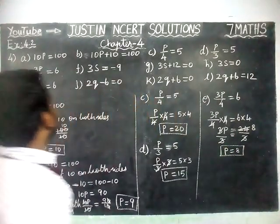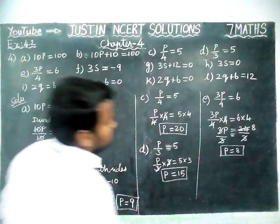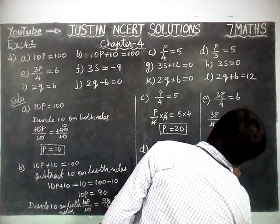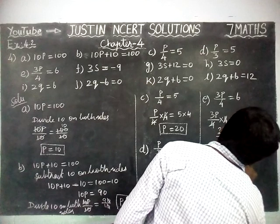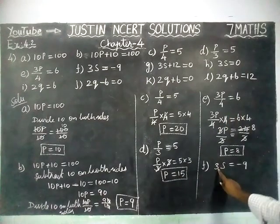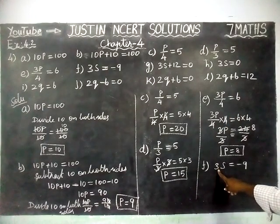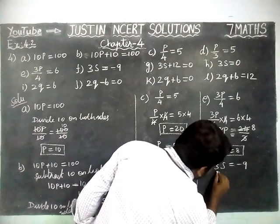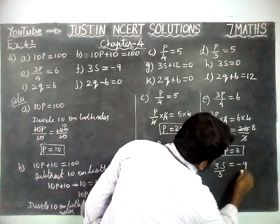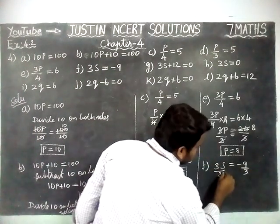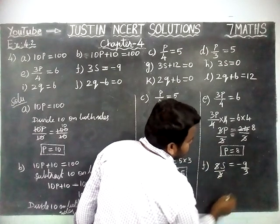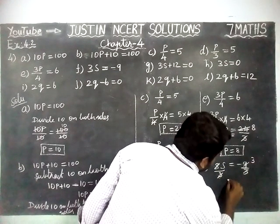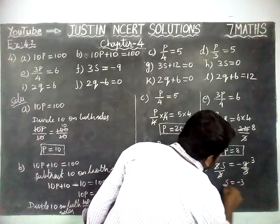And then Part F: 3S is equal to minus 9. Here, 3 is in multiplication, so we are going to divide it by 3. Divide 3 on both sides. 1 three is 3, 3 three is 3, 3 threes are 9. So, S is equal to minus 3.